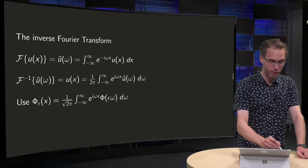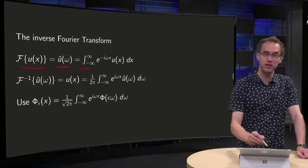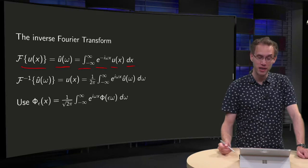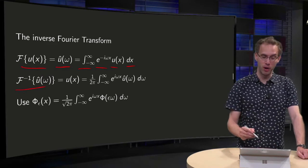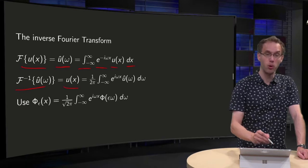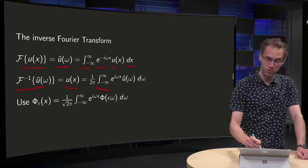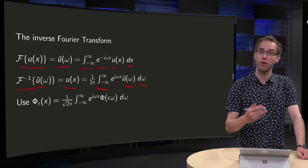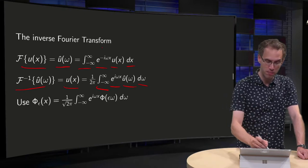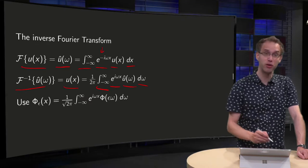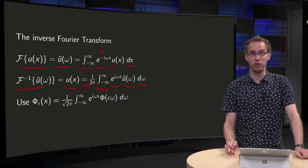We have the Fourier transform of our function u of x, called û(ω), which equals the integral from minus infinity to infinity of u(x) e^(−iωx) dx. We will show that the inverse Fourier transform of û(ω) equals the original function u(x). You again integrate from minus infinity to infinity, but now with respect to ω: û(ω) multiplied by e^(+iωx), and divide by 2π. That is the formula for the inverse Fourier transform.